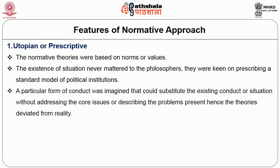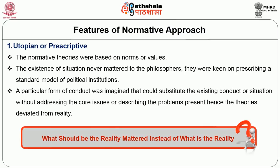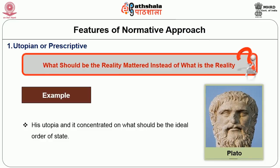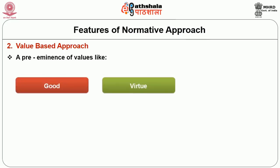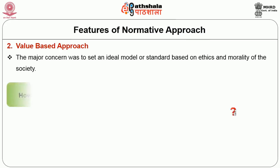Hence the theories deviated from reality — what should be the reality mattered instead of what is the reality. For example, the ideal state of Plato was his utopia, concentrating on what should be the ideal order of state. Secondly, the pre-eminence of values like good, virtue, beauty, bad or unjust colored the normative thinking. The major concern was to set an ideal model based on ethics and morality, and these prescriptions were heavily loaded with values.